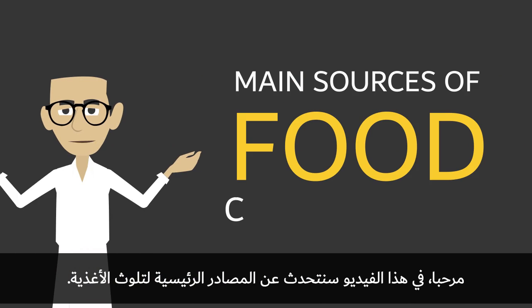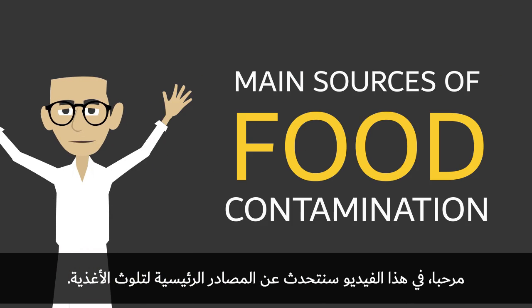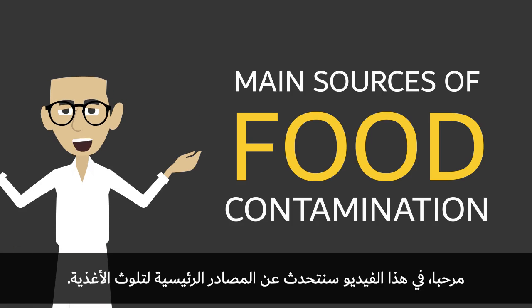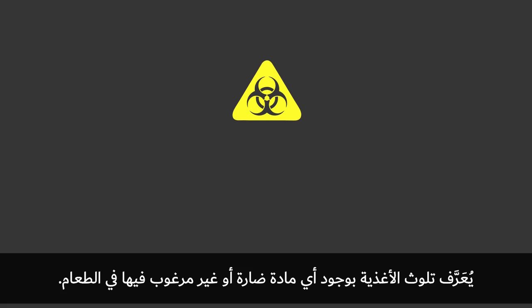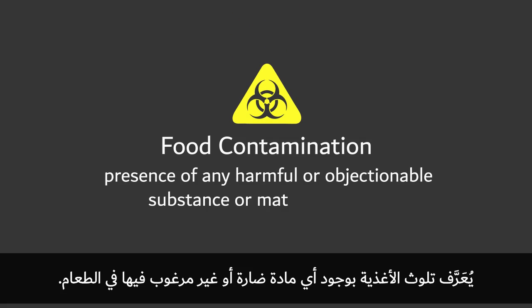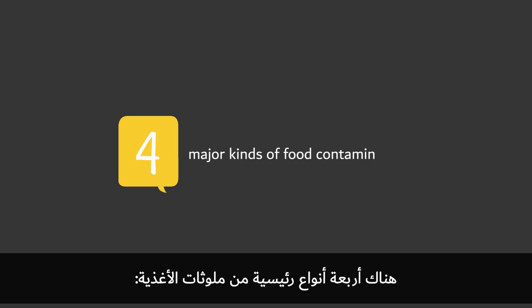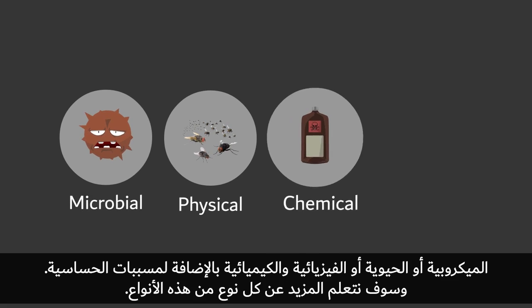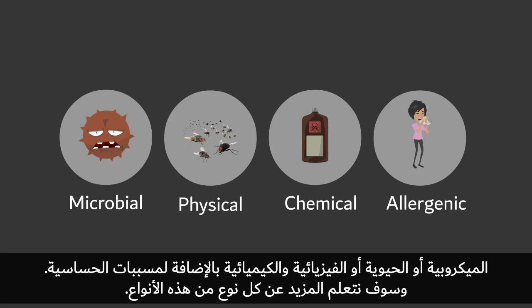In this video, we are going to discuss the main sources of food contamination. Food contamination is the presence of any harmful or objectionable substance or material in food. There are four major kinds of food contamination: microbial, physical, chemical, and allergenic. We will explore each kind here.